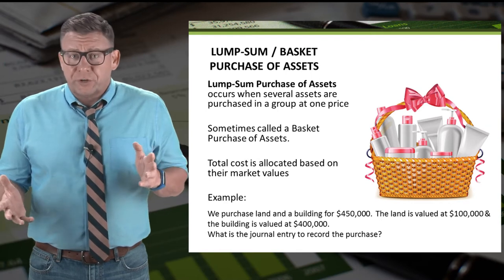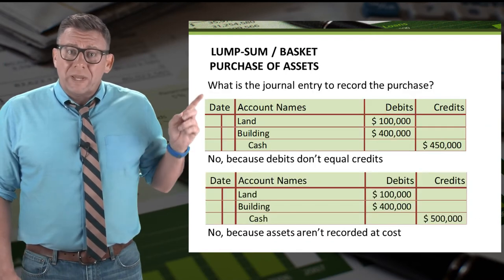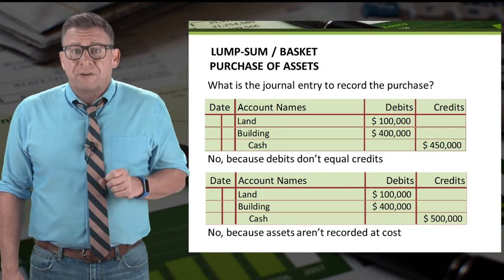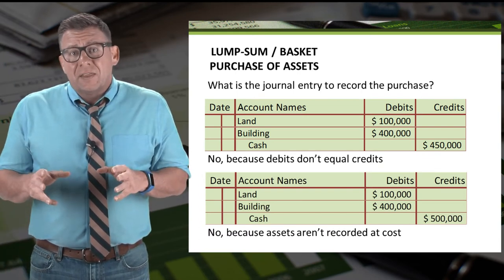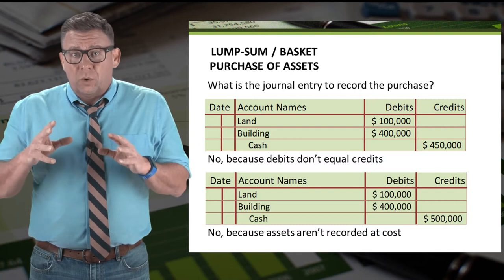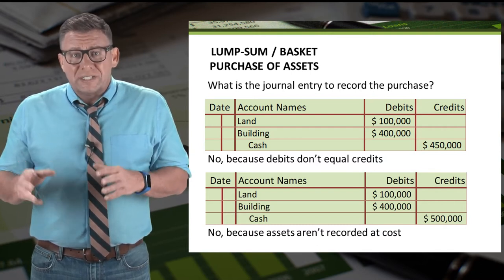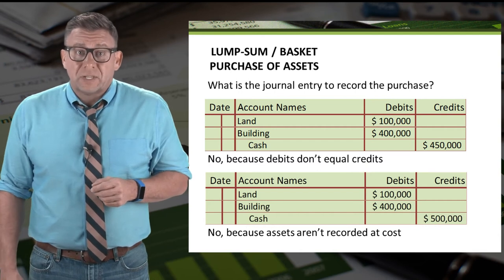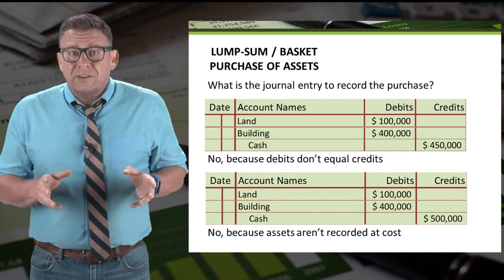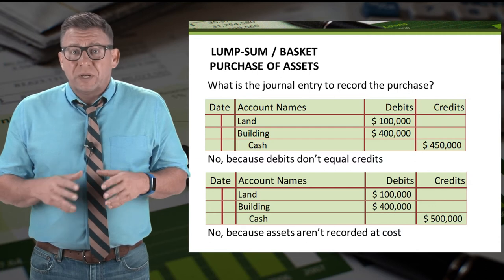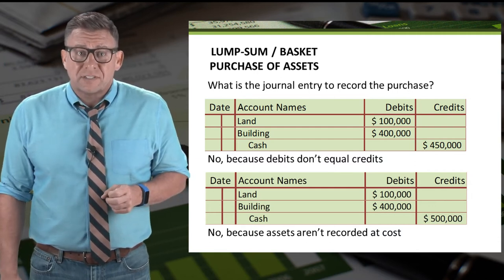So what is the journal entry to record this purchase? We can't debit the assets for their fair market value because we paid less when we bought them in a group — thus the debits wouldn't equal the credits. Additionally, we can't record the credit for the fair value because we didn't pay that much, and assets must be recorded at their costs.